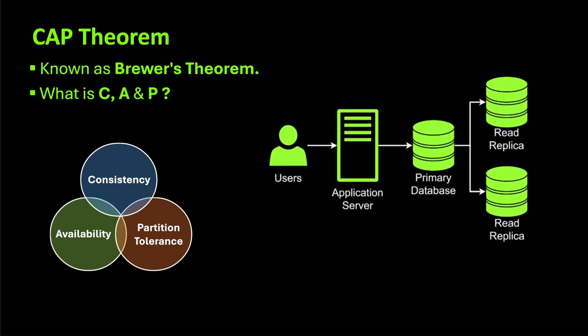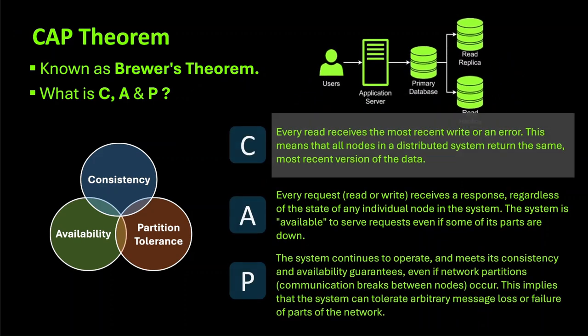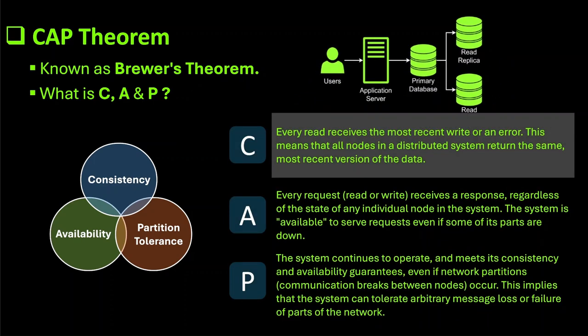First is Consistency. It means that every read operation in a distributed system returns the most recent write result. In other words, all nodes and servers in the system see the same data at the same time. In simpler words, when a user performs a read operation, it is guaranteed that the system will return the latest data, reflecting all the writes that were completed up to that moment.